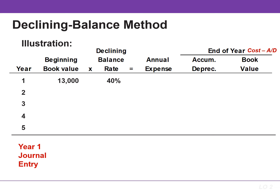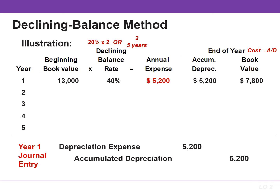The depreciation rate is 40%, which is double the straight-line rate of 20%, or we can simply divide the useful life into two. The depreciation expense is $5,200, found by multiplying the book value of $13,000 by the rate of 40%. Accumulated depreciation increases and the book value decreases by this amount. The journal entry in year one results in a debit to depreciation expense for $5,200 and a credit to accumulated depreciation for the same amount.